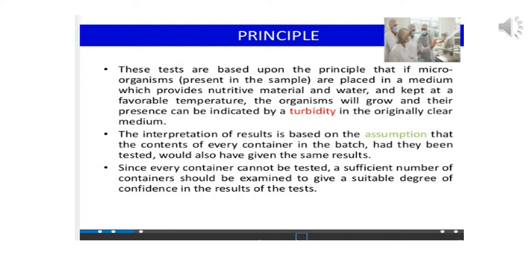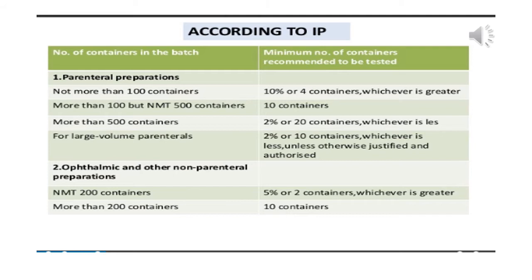The interpretation of results is based on the assumption that contents of every container in the batch, had they been tested, would also have given the same results. Since every container cannot be tested, a sufficient number of containers should be examined to give a suitable degree of confidence. It's obvious — if we subject all containers to sterility testing, we won't have any batch left at the end of testing, because sterility test is a destructive test. We cannot regain our product back.